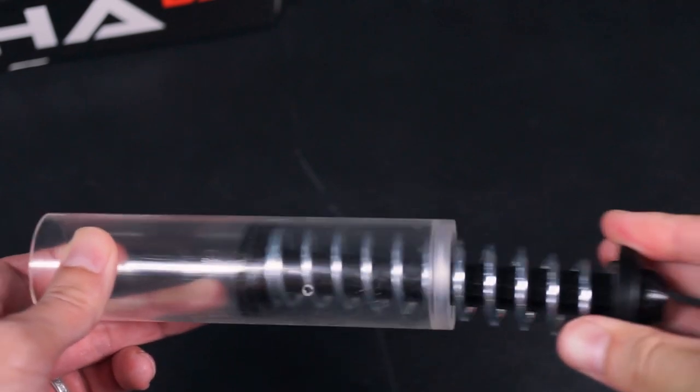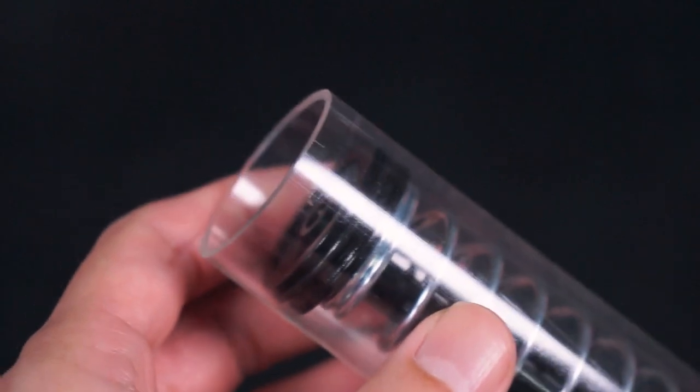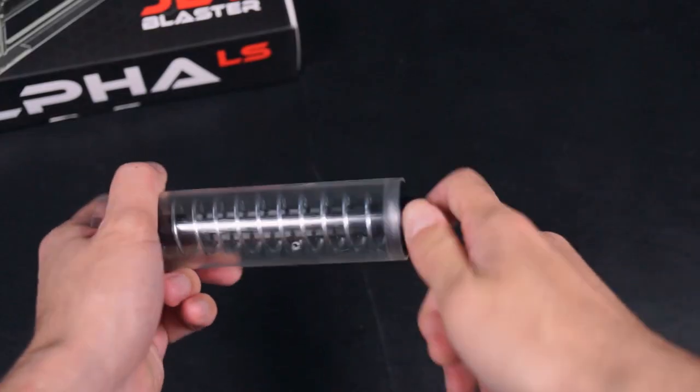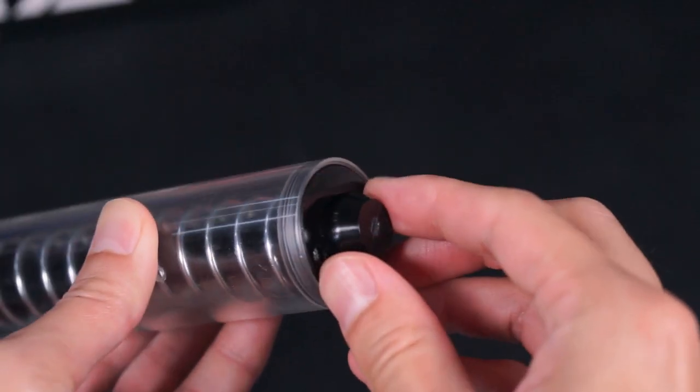Slide the plunger rod assembly into the plunger tube, making sure that the plunger head o-ring does not get pinched. Thread the plunger rod assembly till it sits flush to the plunger tube.